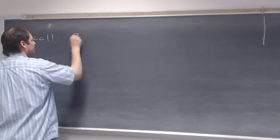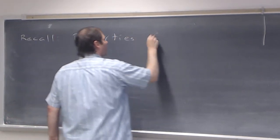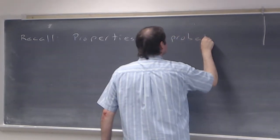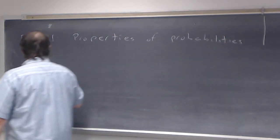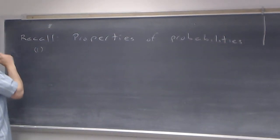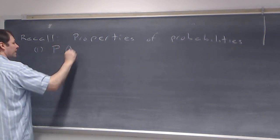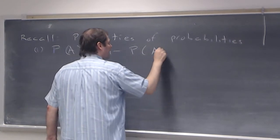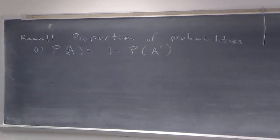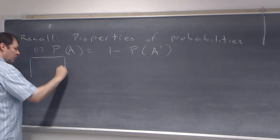So these are properties of probabilities. The first one we had listed was: the probability of A is equal to 1 minus the probability of A complement. The way we can look at this and see the idea is through something called a Venn diagram.